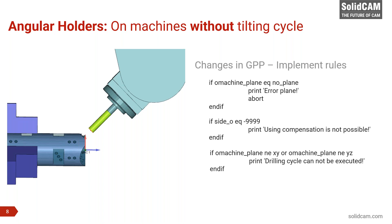The side-O variable is related to compensation. In the trace you will see this value as 'error.' You need to write: if side-O equals minus 9999, please print an error message — you can also abort. For drilling, you can put inside the drill procedures: if old machine plane is not equal to XY or YZ, please print an error that this drilling job can only be executed without a cycle. One small detail: if you have a machine without a tilting cycle, it is completely impossible to do a tapping cycle in an inclined plane.